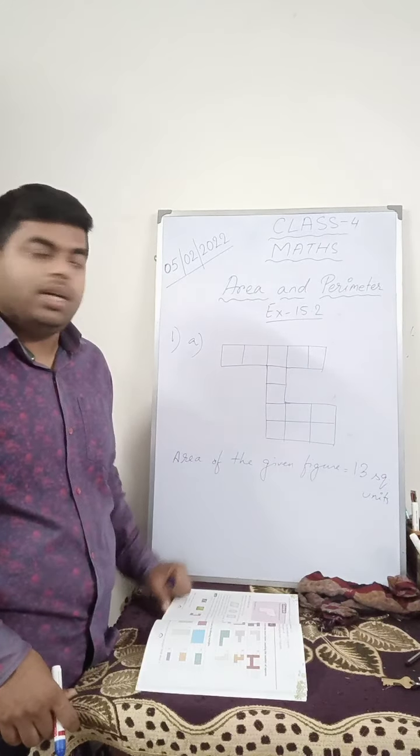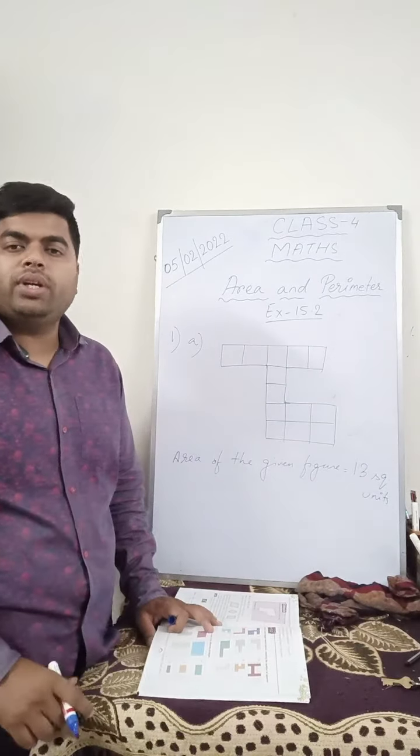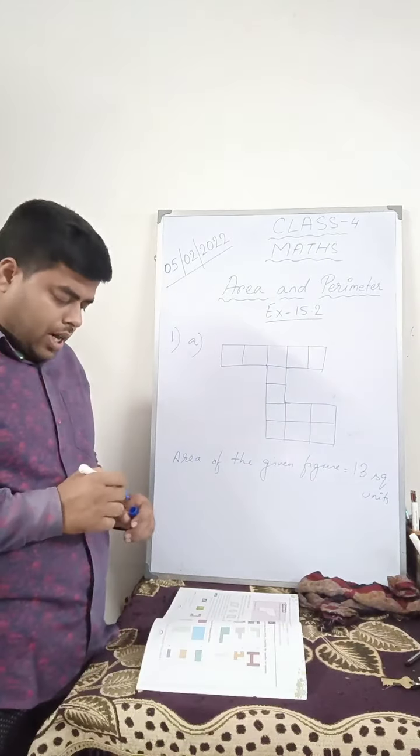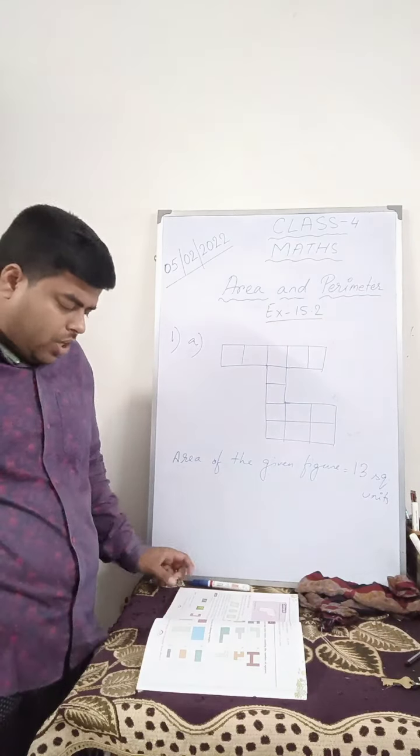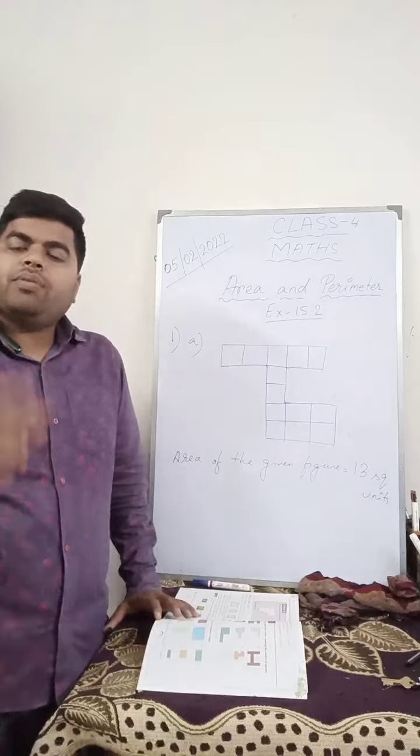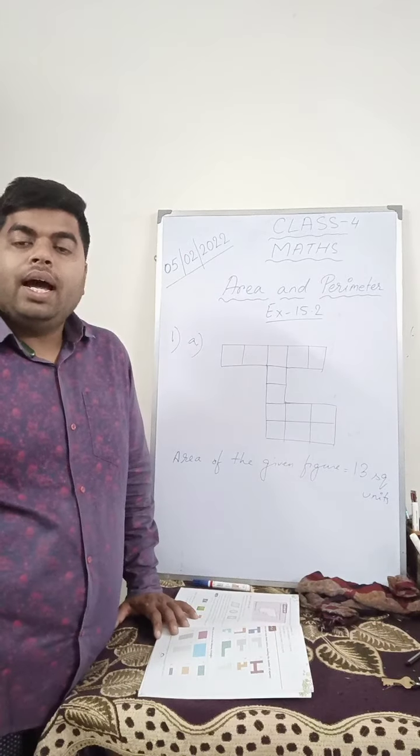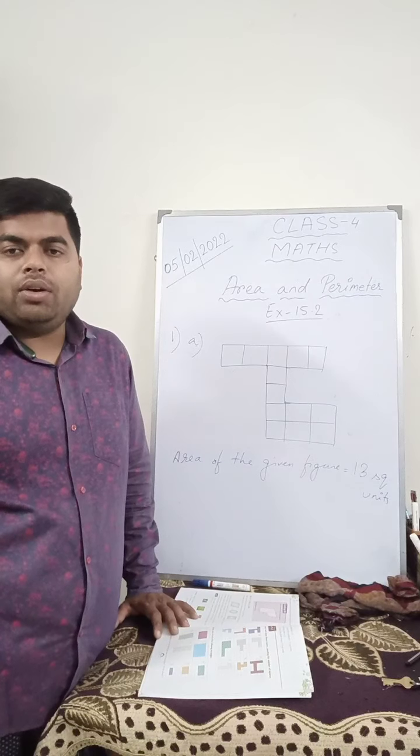If they give you any unit, then instead of unit place, you will write whatever unit they give you. So just count for question number 1 and 2. Both just count the number of boxes that are enclosed in the given figure. And then only you can find out the answer.